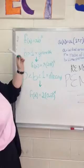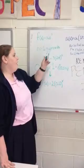So this is the normal equation for exponential growth and decay, which is f of x equals a times b to the x power.